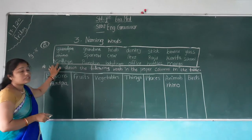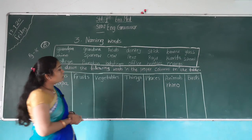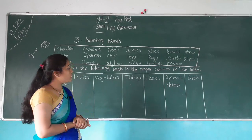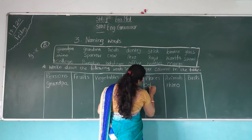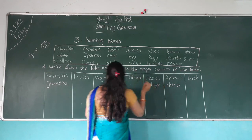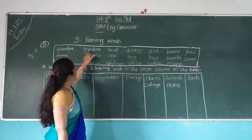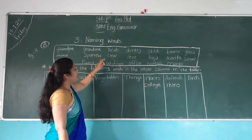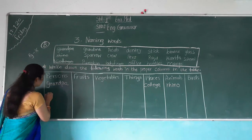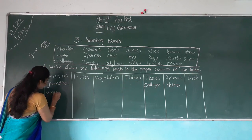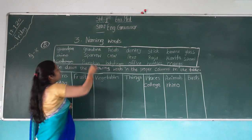Read the spelling — C-O-L-L-E-G-E — College. College is the name of a place, so we will write it in the places column. And cut this. Next — G-R-A-N-D-M-A — Grandma. Grandma is also the name of a person, so write it in the person column. And cut this.